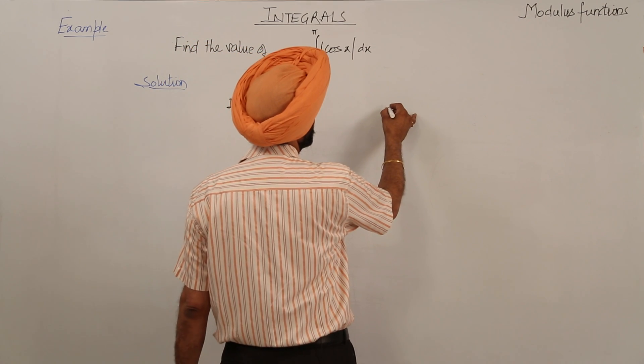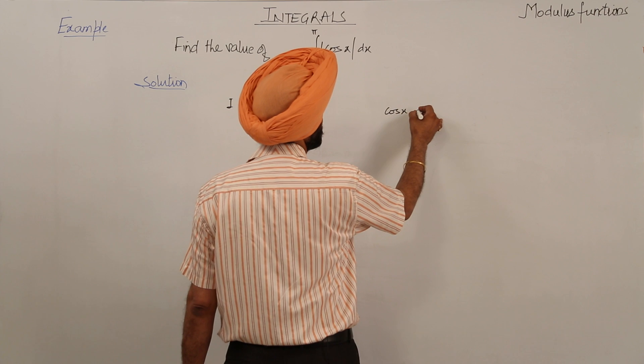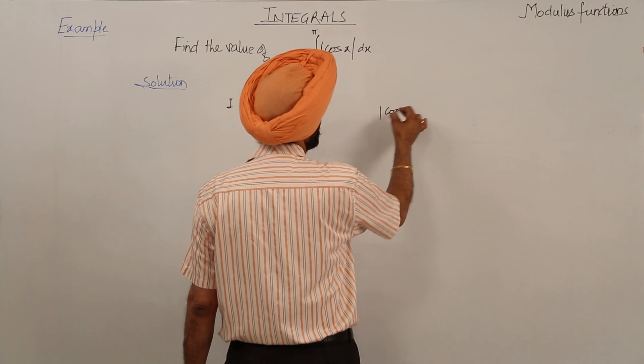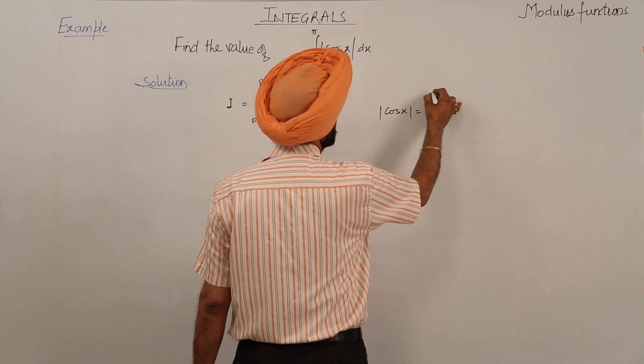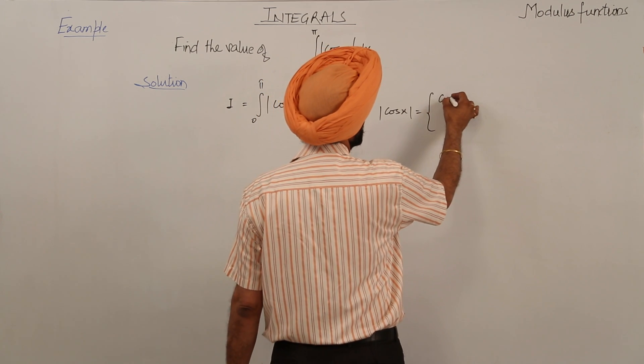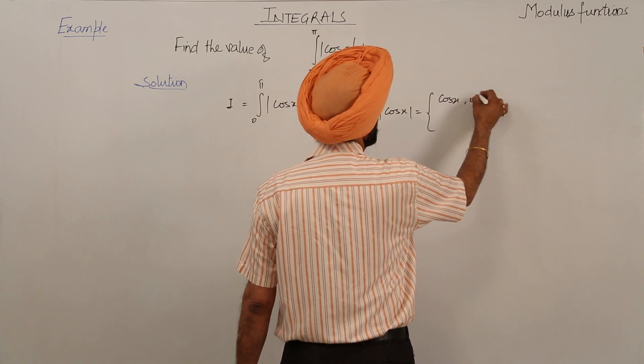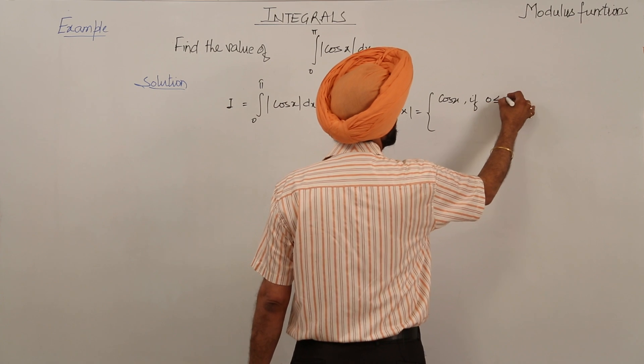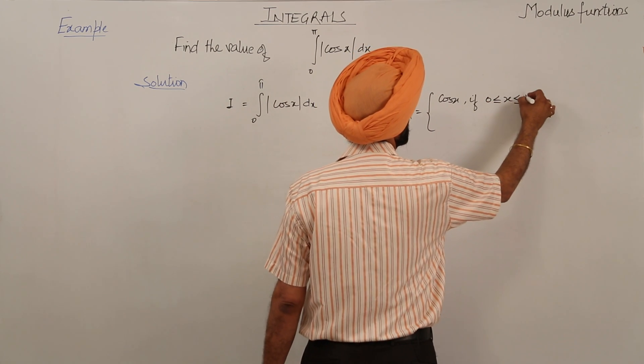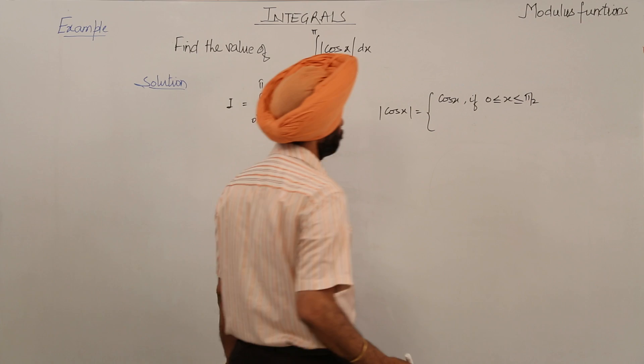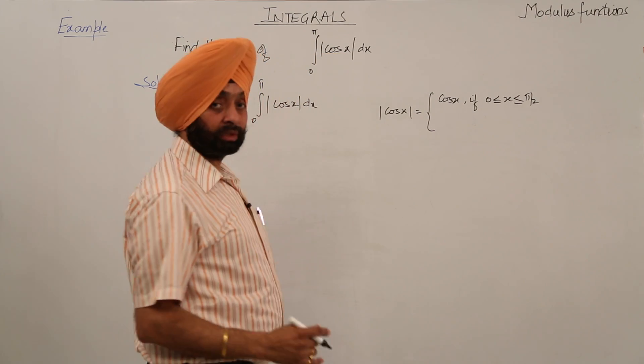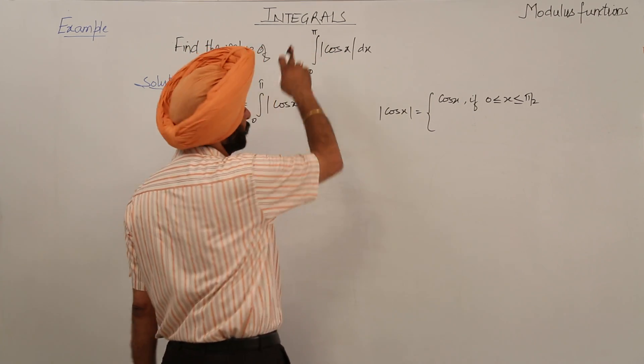So what can we write? Now, the modulus of cosx is equal to cosx if 0 is less than or equal to x is less than or equal to pi by 2. It's positive in the first quadrant because it is from 0 to pi.